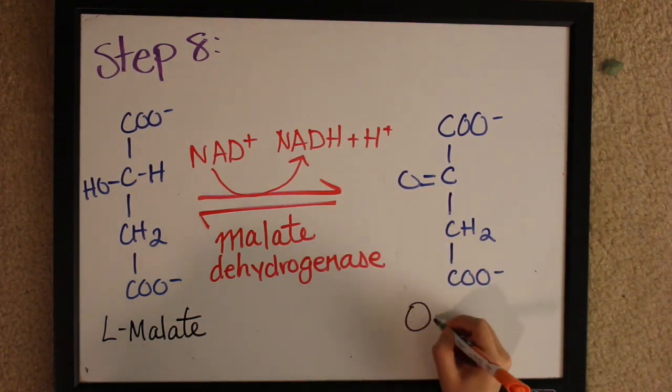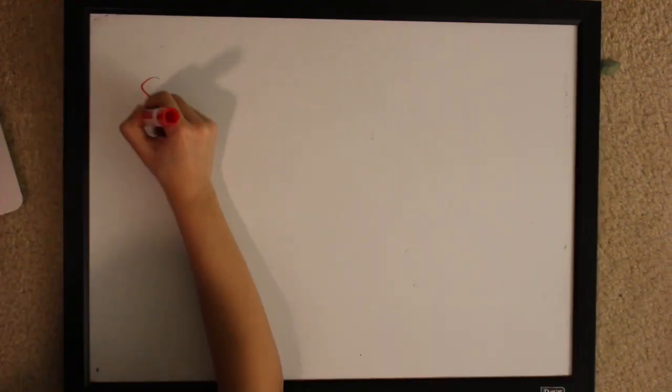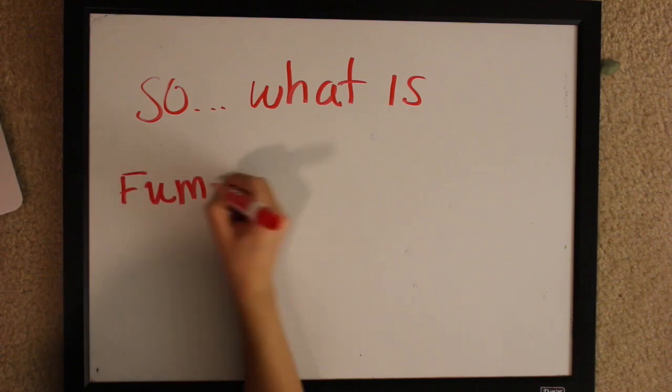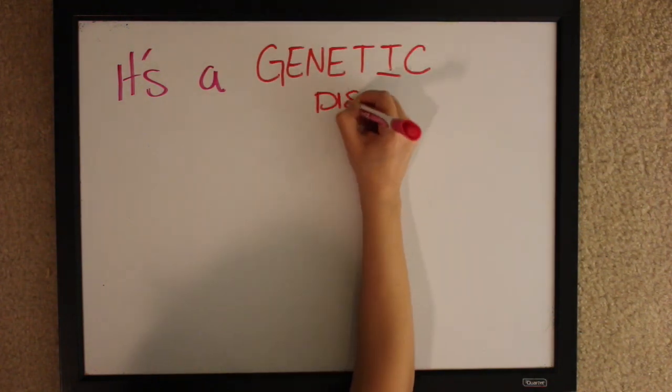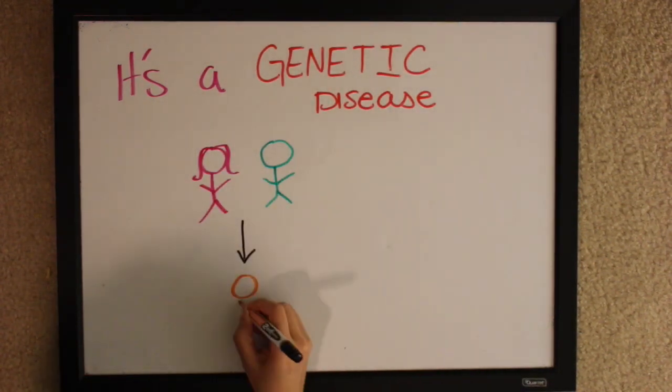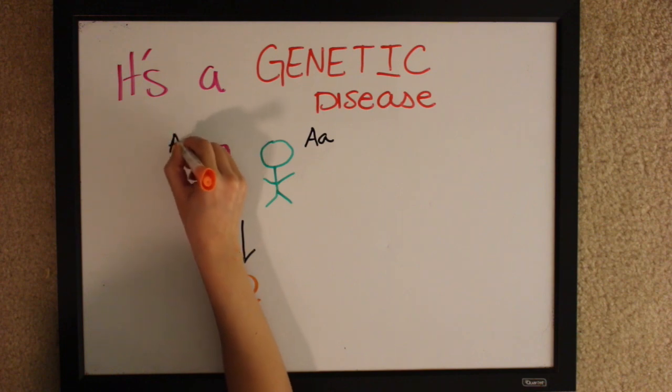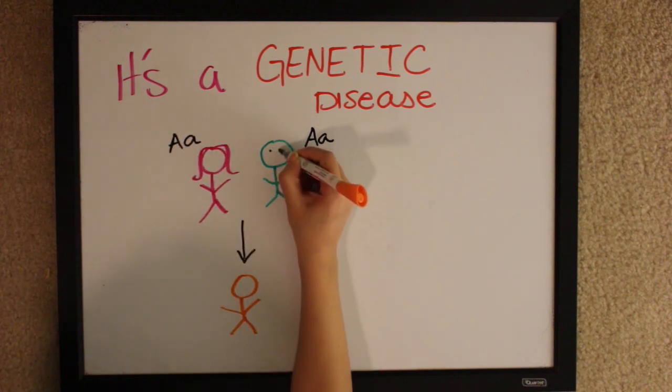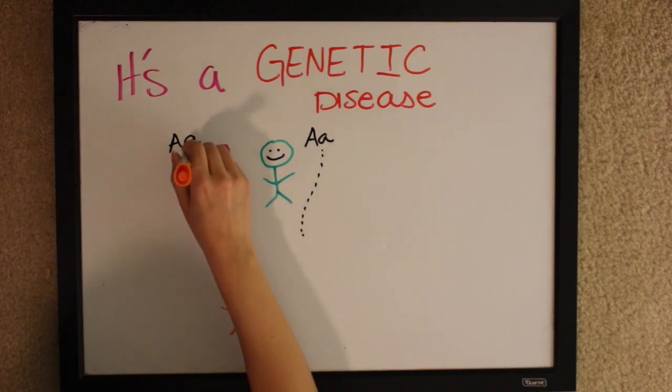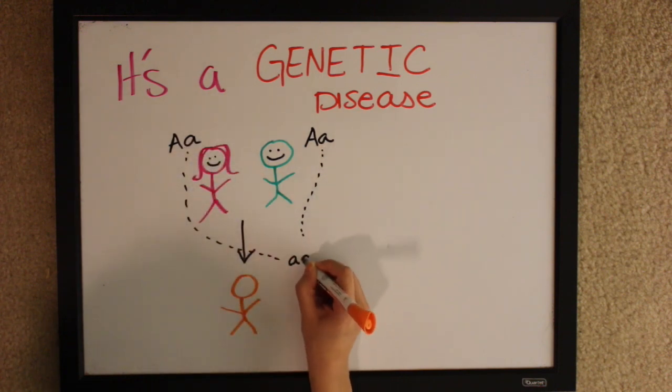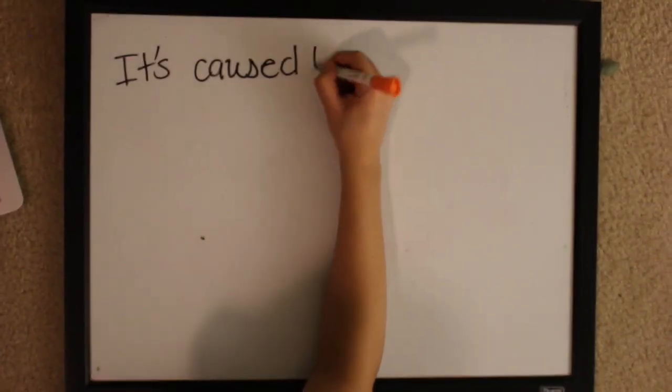So what exactly is fumarase deficiency? It's a genetic disease, so that means it's only transmitted from your parents to you. Both parents have the good and the bad gene - the good one is big A and the bad one is little a. They won't show the bad trait, but they can pass both of them on to their child, which will show the deficiency. It's caused by mutation in step seven.